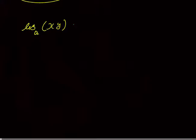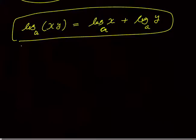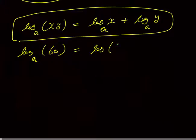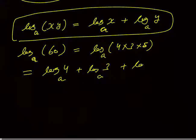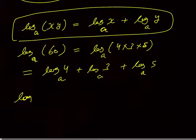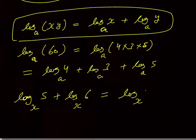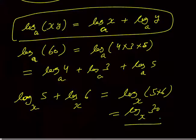The next concept: log base a of (x × y) can always be written as log_a(x) + log_a(y). Product becomes plus, and plus becomes product — vice versa is also true. For example, log of 60 to the base a can be written as log(4×3×5) to the base a, which equals log_a(4) + log_a(3) + log_a(5). Conversely, log_x(5) + log_x(6) = log_x(30).